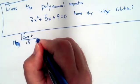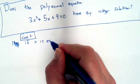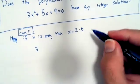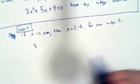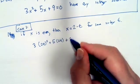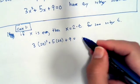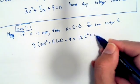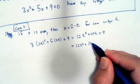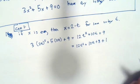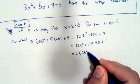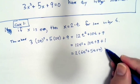Let's assume first — sometimes you have to look at two different possibilities. The first possibility is if x is even, then x equals 2 times t for some integer t. So we have 3 times (2t) squared plus 5 times 2t plus 9, which is equal to 12t squared plus 10t plus 9, which is equal to 12t squared plus 10t plus 8 plus 1. I'm going to factor out a 2 here, so this would be equal to 2 times (6t squared plus 5t plus 4) plus 1.